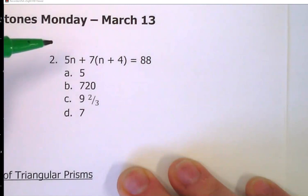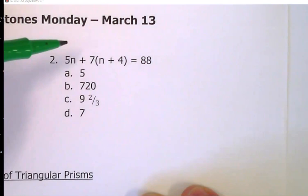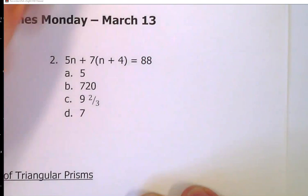And for that, we're going to have to use our distributive property. So when I use distributive property, that means everything outside the parentheses, you multiply inside the parentheses. So I'm going to multiply my 7 by my n and my 7 by my 4. So what that's going to give me when I rewrite my equation is 5n plus 7n plus 28 equals 88.